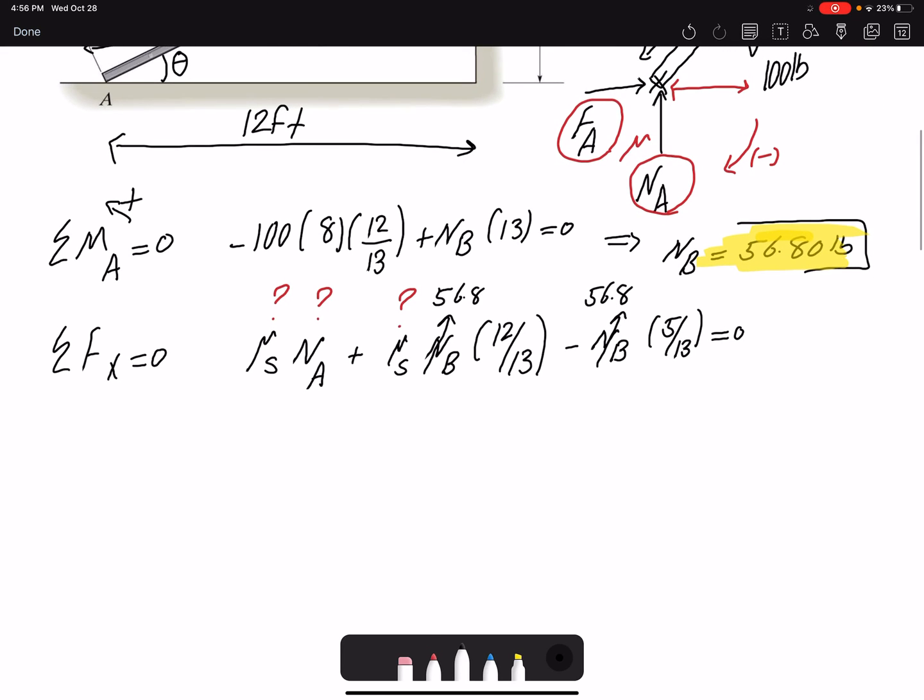I need to resort to my other equilibrium equation. Summation of forces in Y: I have N_A minus 100, that would be the weight. I have N_B. The vertical component would be 12 over 13 times the magnitude of N_B. I have F_B, the vertical component would be 5 over 13, equals zero.